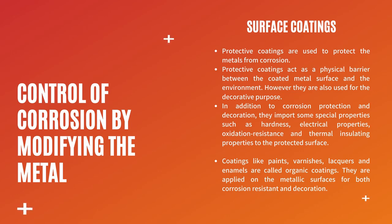In addition to corrosion protection and decoration, protective coatings impart special properties such as hardness, improved electrical properties, oxidation resistance, and thermal insulating properties to the protected surface. Coatings like paints, varnishes, lacquers, and enamels are called organic coatings because they are made of organic materials. They are applied on metallic surfaces for both corrosion resistance and decoration.